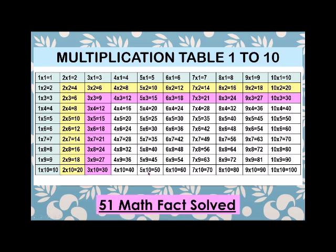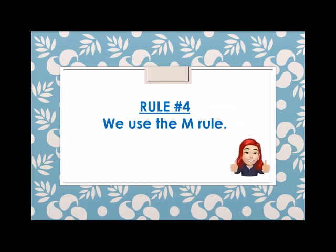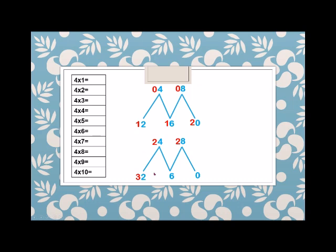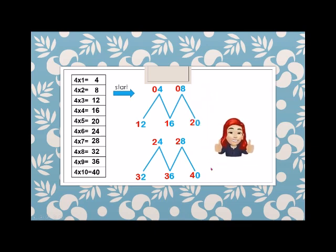From rule number 3, we just solved 51 math facts. Rule number 4: we use the M rule. We have 2 M's and we write the ones digits up and down. Starting from the bottom: 2, 4, 6, 8, then 0, then on the next M: 2, 4, 6, 8, 0. Then we write the tens from the top: 0, 0, 1, 1, 2, 2, 2, 3, 3, 4. So counting: 4, 8, 12, 16, 20, 24, 28, 32, 36, and 40.